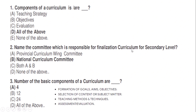Name the committee which is responsible for finalization of curriculum for secondary level. Correct option: B — National Curriculum Committee. The number of basic components of curriculum are: correct option A — four basic components.